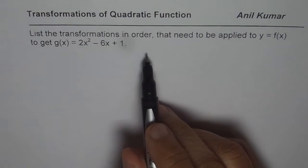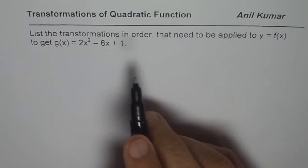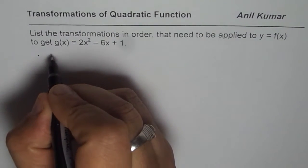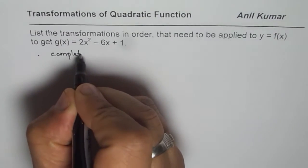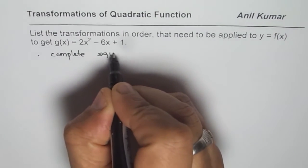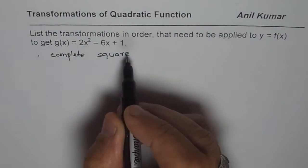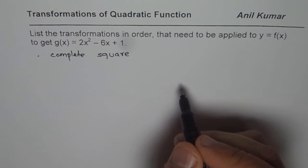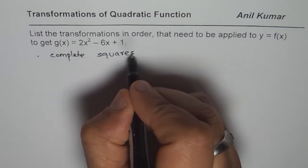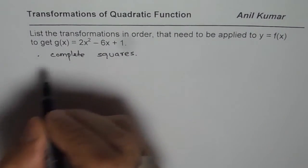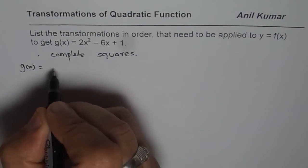Whenever a question is like this, you cannot straight away write the transformations. The first step should be we need to complete squares. Once you complete squares, you get the vertex form of the quadratic equation and then you can easily write down the transformations. So that is critical. Let us complete the squares and write down g of x in vertex form.